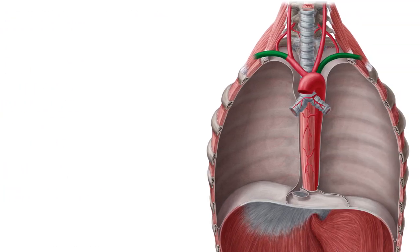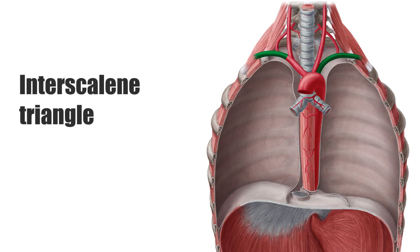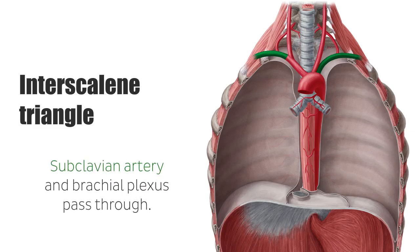The triangle between the anterior scalene, the middle scalene, and the first rib forms the interscalene triangle. The subclavian artery, highlighted in this image in green, and the brachial plexus pass through this gap. Note that the subclavian vein runs ventrally from the anterior scalene muscle.